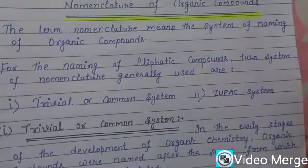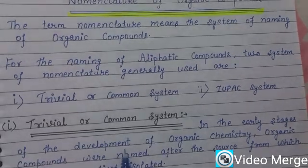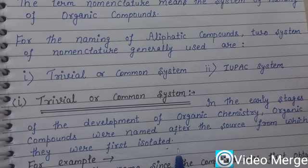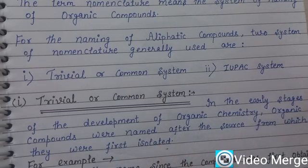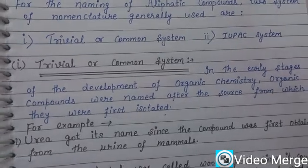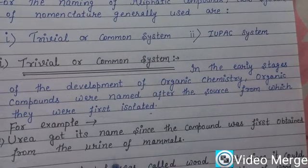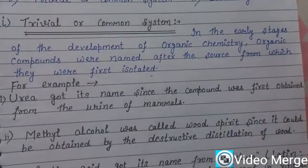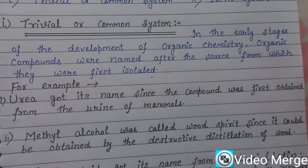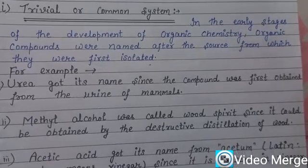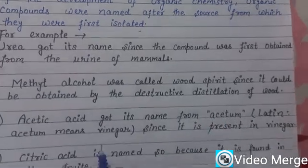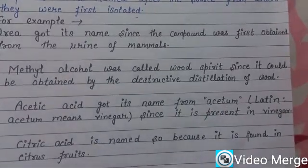In the trivial or common system, in the early stages of development of organic chemistry, organic compounds were named after the source from which they were first isolated. The compounds were named on the basis of the source from which they were obtained. For example, urea got its name since it was first obtained from the urine of mammals. Methyl alcohol was called wood spirit since it could be obtained by the destructive distillation of wood. Acetic acid got its name from 'acetum,' a Latin word meaning vinegar, as it is present in vinegar. Citric acid is named so because it is found in citrus fruits.